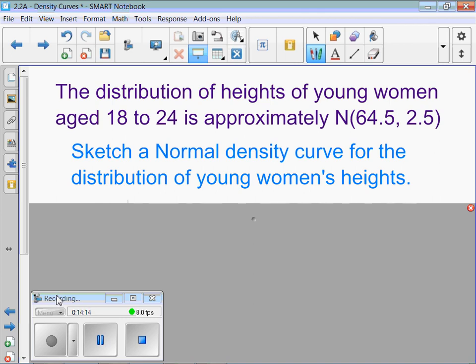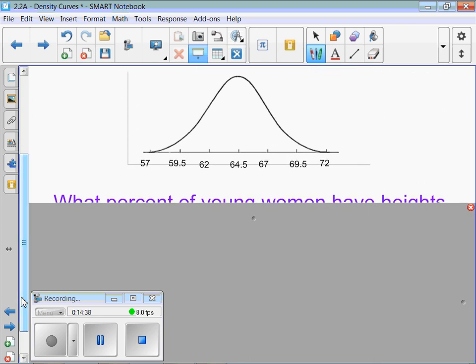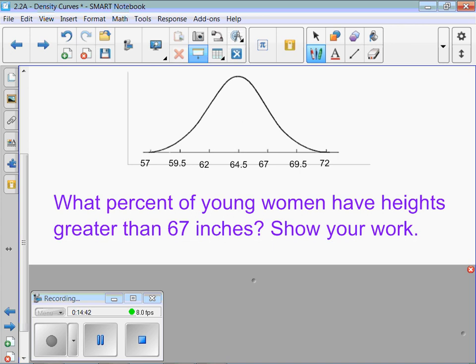The distribution of heights of young women, age 18 to 24, is approximately normal. This number that's listed first is the mean, and this number that's listed second is the standard deviation. First, I just want you to sketch the density curve for the distribution and put those numbers on the bottom. Now, on your own paper, what percent of young women have heights greater than 67 inches?